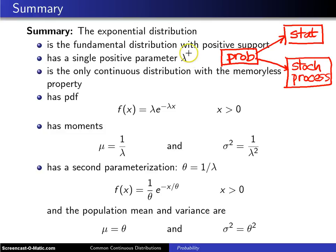It has a single positive parameter lambda that is known as a rate. It is the only continuous distribution out there with the memoryless property. The only discrete distribution, of course, was the geometric.